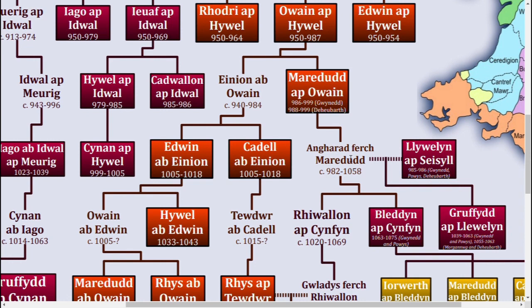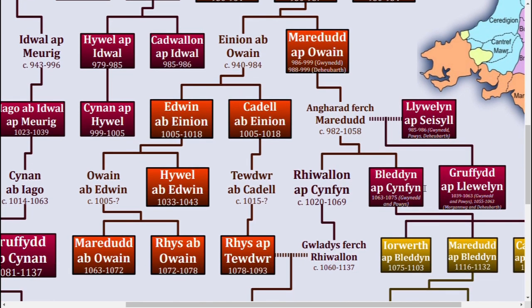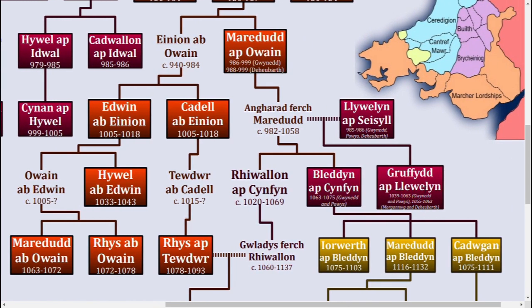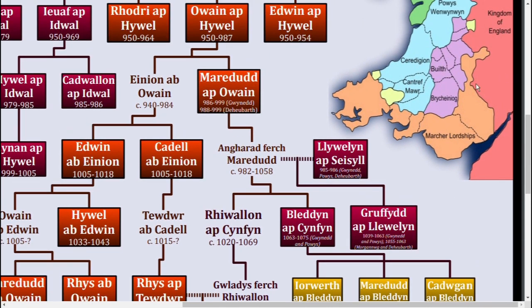Her two sons, Blevyn and Grewarsen, were installed as co-rulers of Gwynedd in 1063 by Harold Godwinson, right before the Norman Conquest. And their half-brother Griffith was previously able to gain dominion over actually all of Wales, even including the southeastern parts of Wales not actually included on this tree.